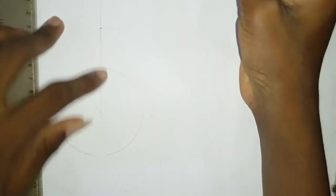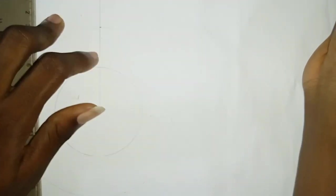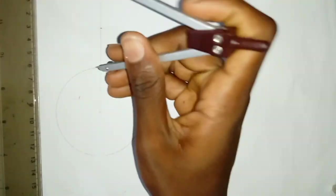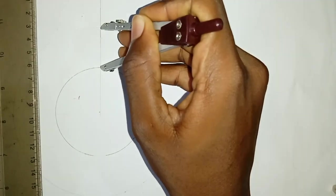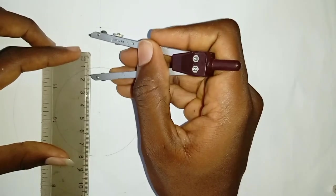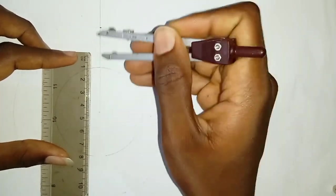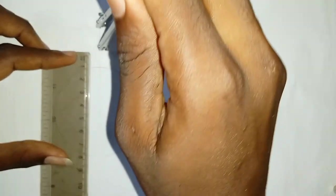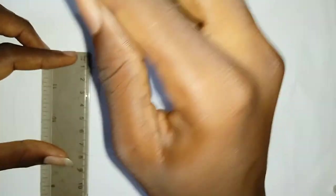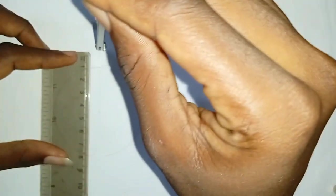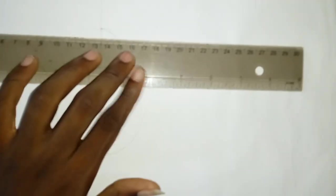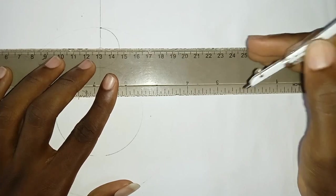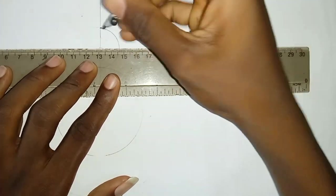So we're going to divide this lift. Remember this is the lift, which is 30mm. We're going to divide this lift into six equal parts. This is 30, so we'll divide it by 2, giving us 15. So you mark 15. Then we'll draw a straight line.